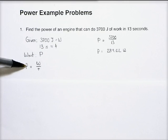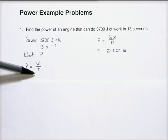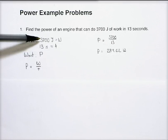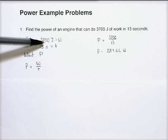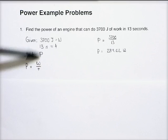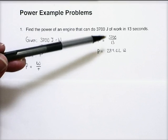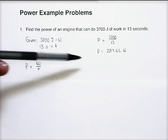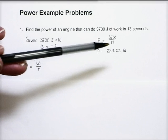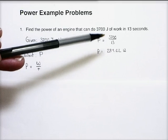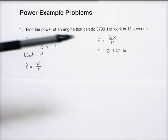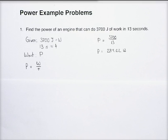And then I write down the equation. Power equals work divided by time. And now I'm going to substitute what of my givens I know. So I know that 3,700 joules is the work. So 3,700 goes on top, just like we see over here. And 13 seconds is a time. Time goes on bottom. So I put 13 over there. And now it's a division problem. 3,700 divided by 13. And the total power, rounded off to the 100s place, is 284.62 watts.